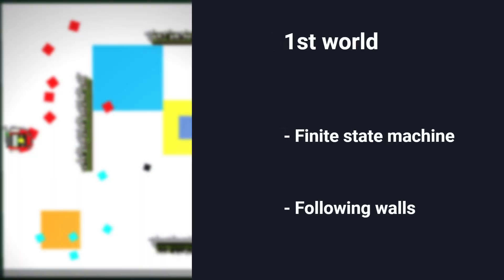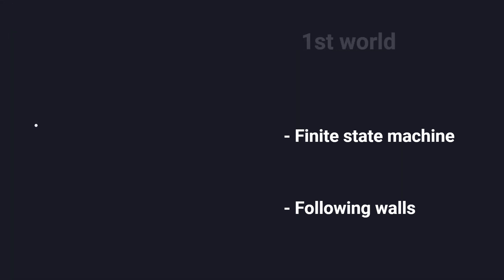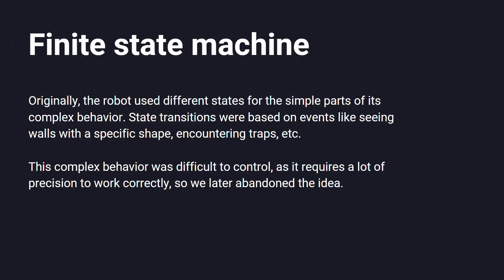In the first world, there are two main functions. The first one is a finite state machine. The robot uses different states which give it specific orders for easier control of robot movement in the first world.